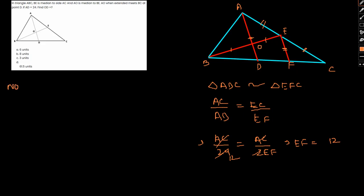Now, in triangle BEF we can see OD is parallel to EF, because AD was parallel to EF and we know BO is equal to OE.